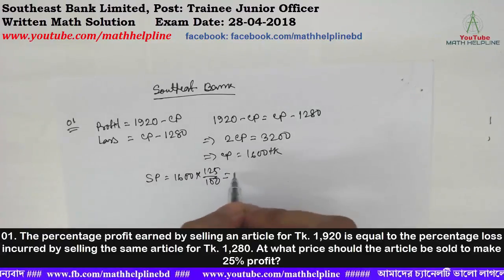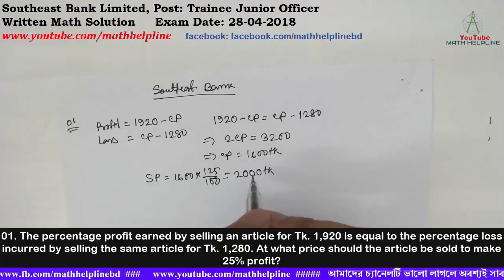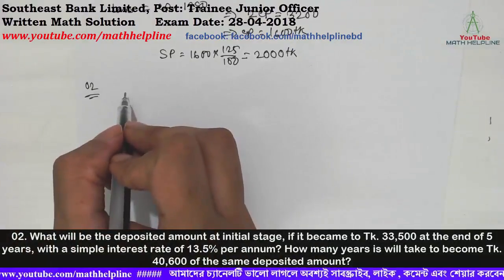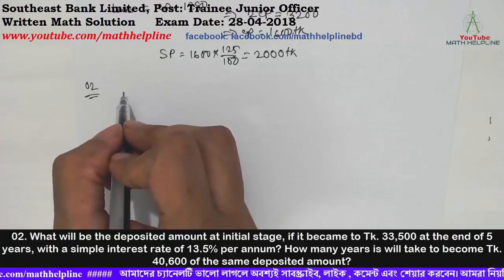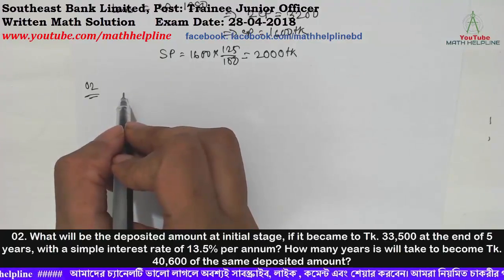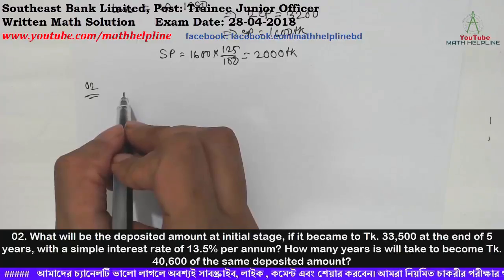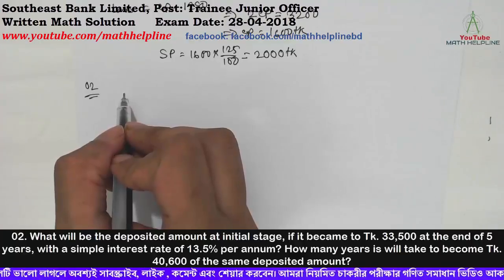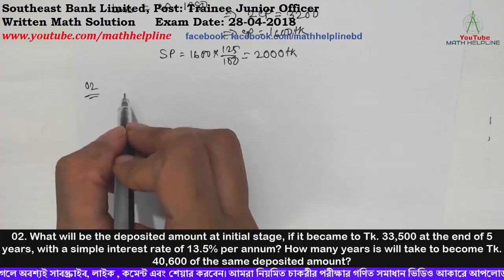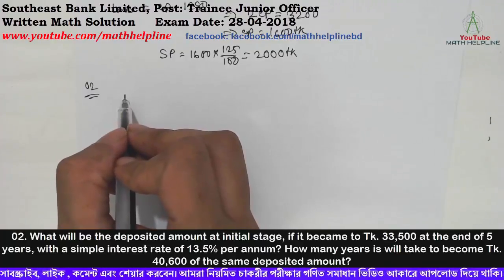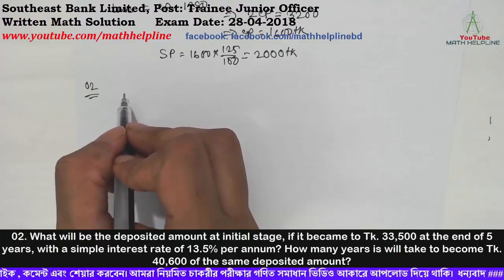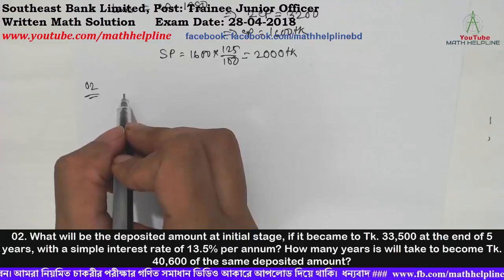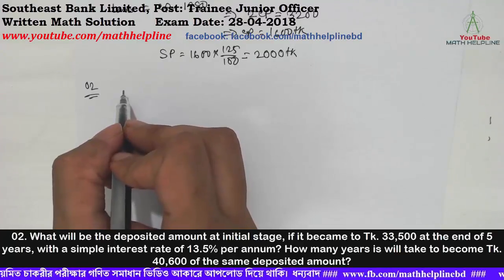Second problem: How many years will it take for the same deposit to become taka 40,600? The problem states: at 13.5% interest rate, a deposit of taka 5,500 grows. We need to find how long it takes to reach taka 4,600.